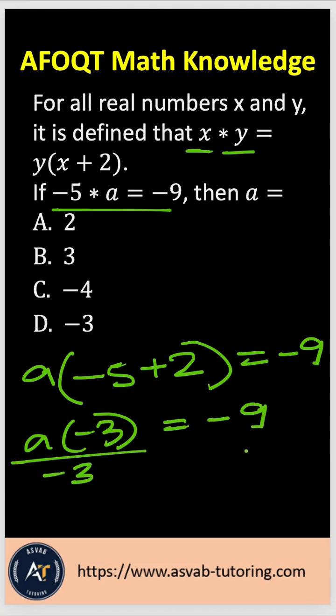So divide both sides by negative 3. Negative 3 and negative 3 cancel out, that gives you